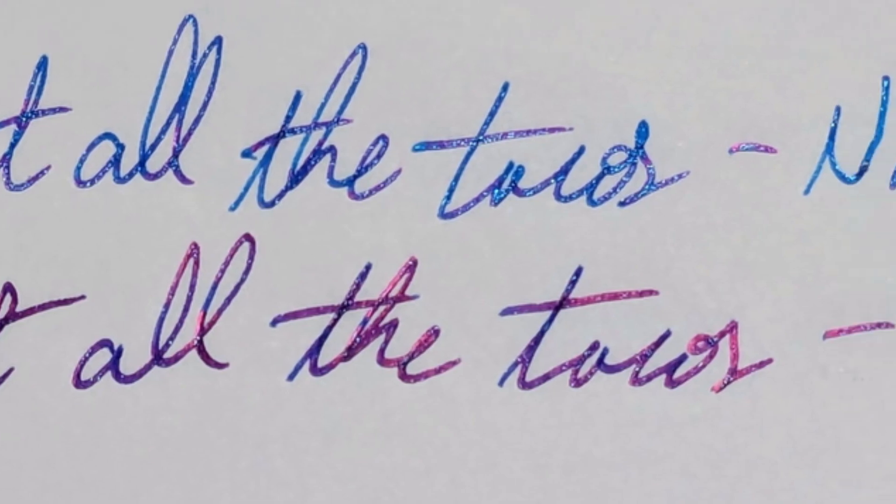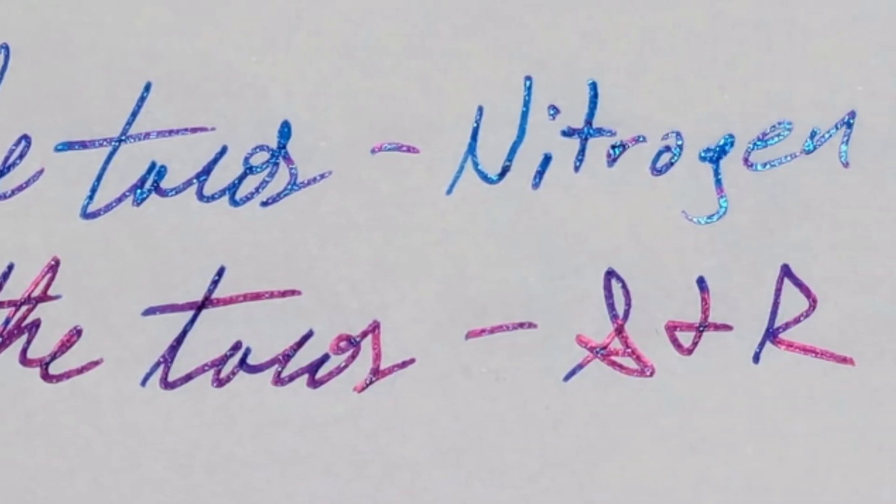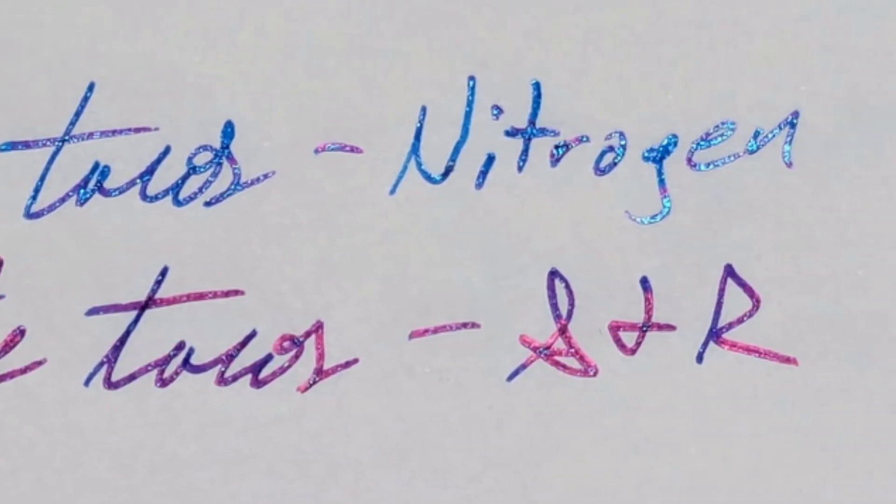And finally, the Tomoe River, with a fair amount of sheen on the nitrogen, and the Skull and Roses becoming almost a red or purple ink, barely noticeable to be a blue ink under the right lighting conditions.